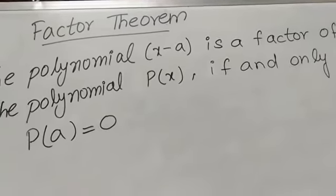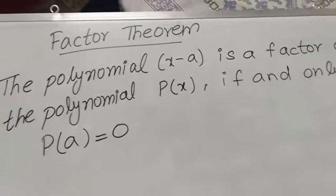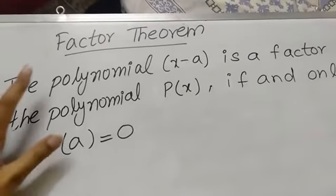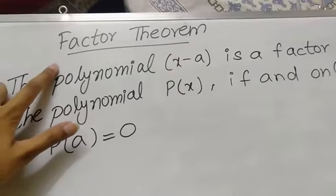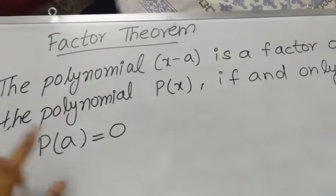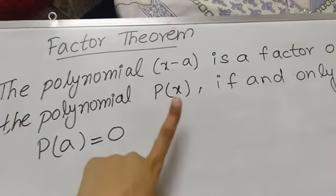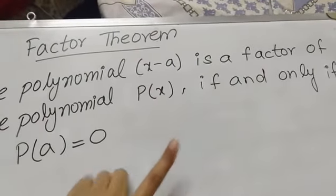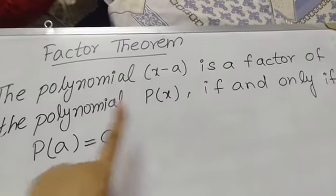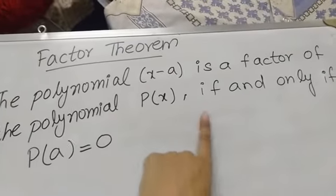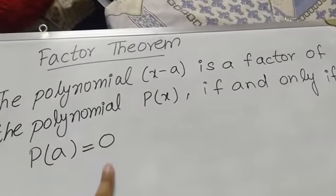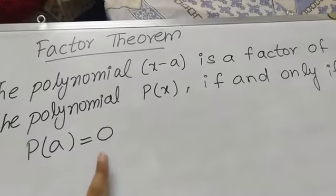Before starting question number 2, I want to tell you about the factor theorem. What is the factor theorem? The polynomial x minus a is a factor of the polynomial p of x if and only if p of a is equal to 0.